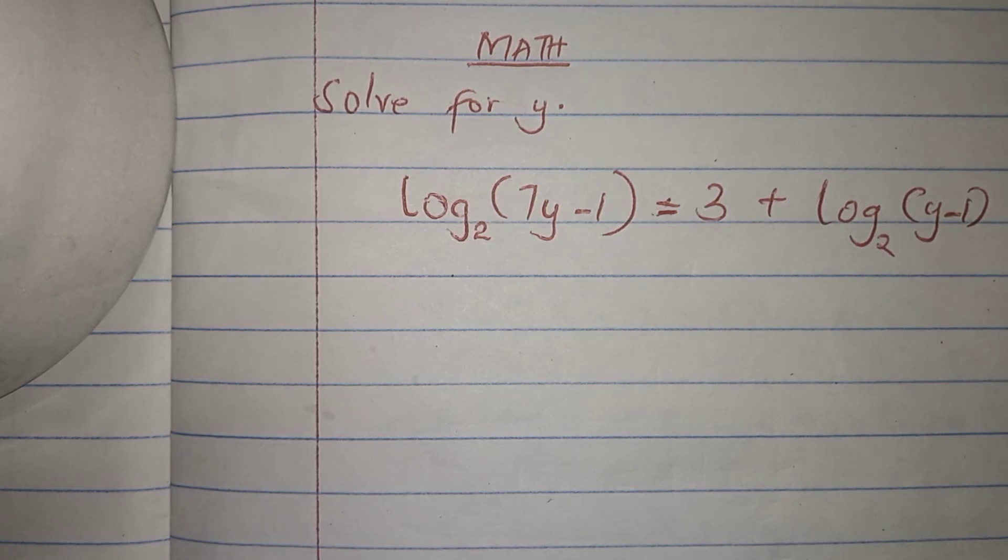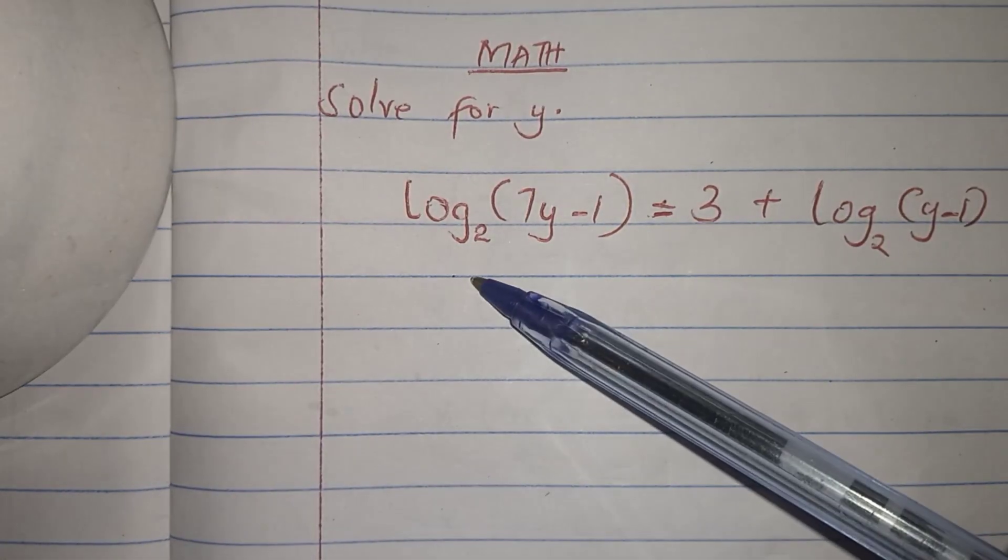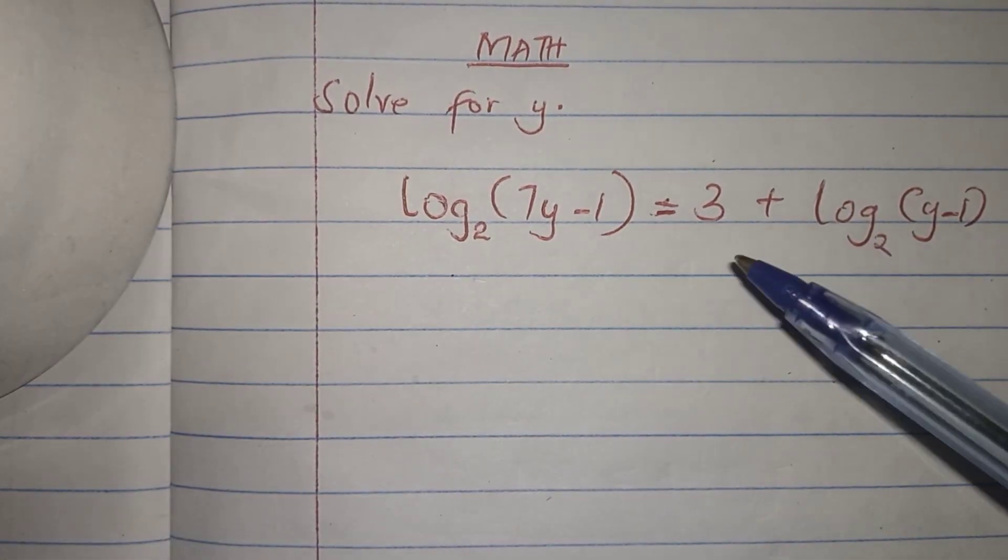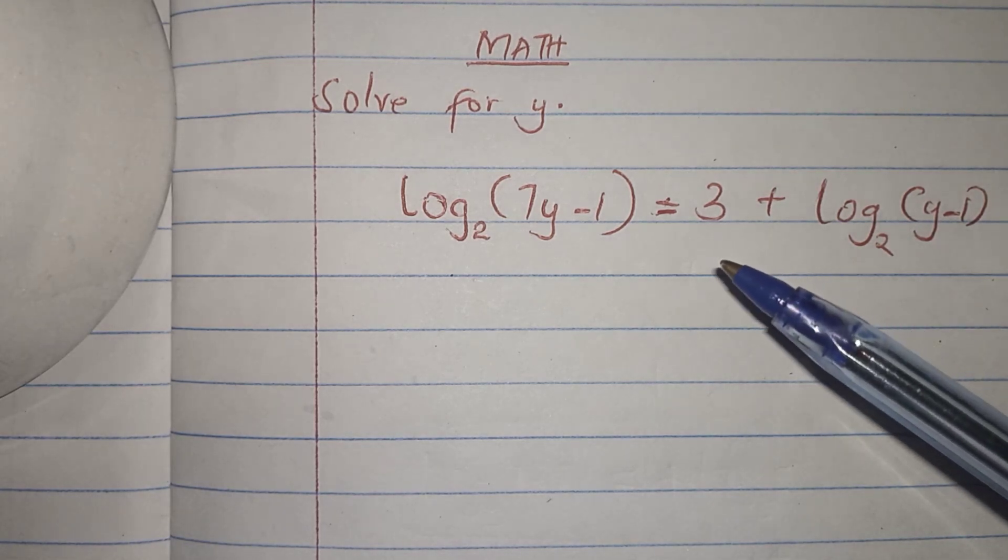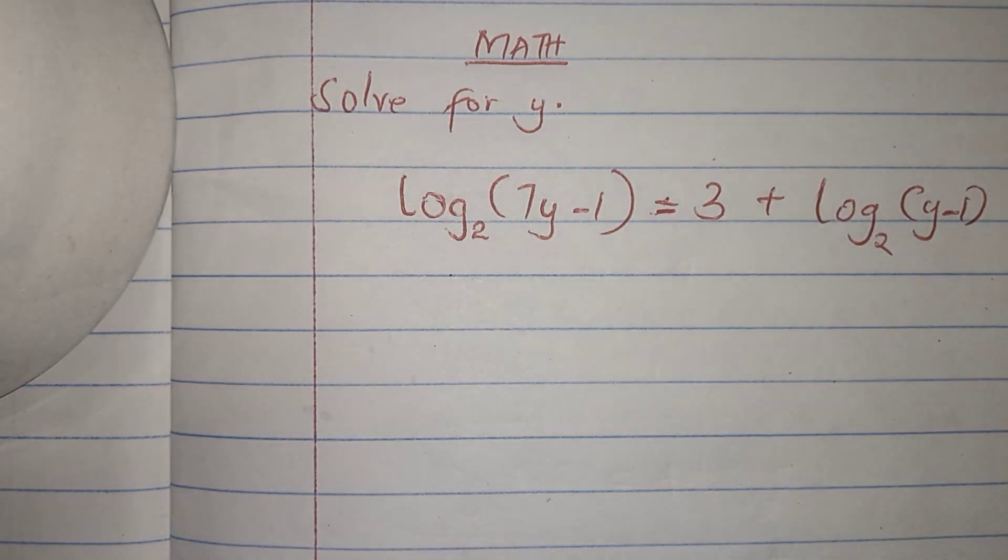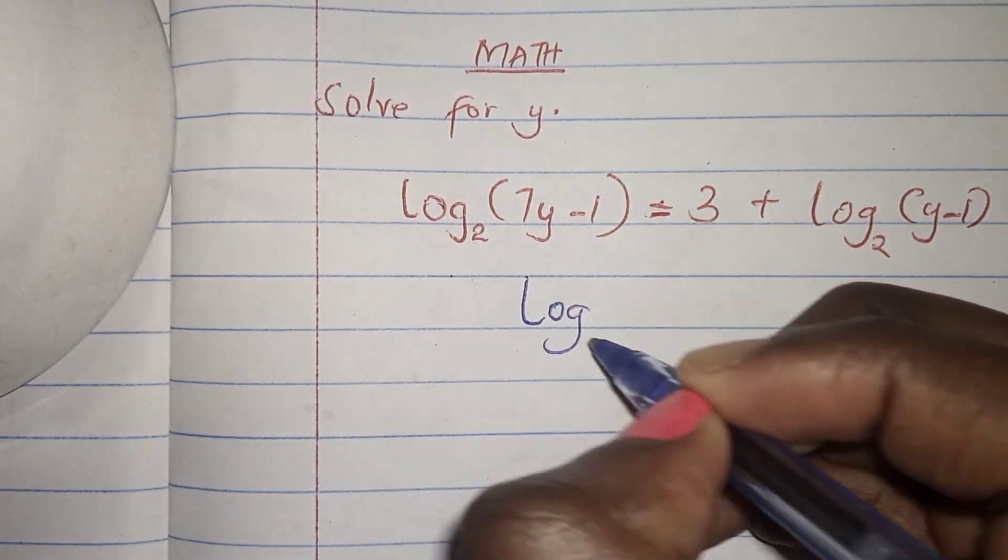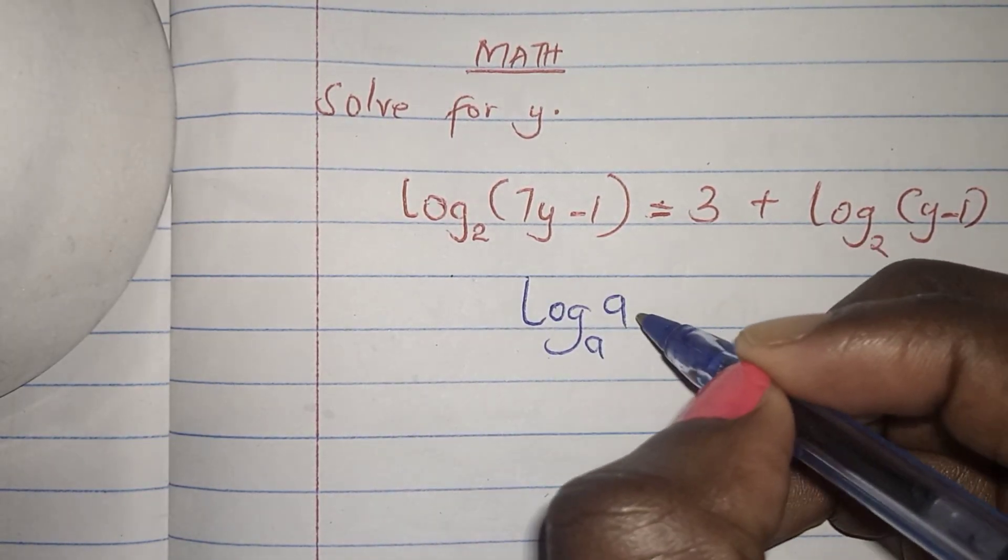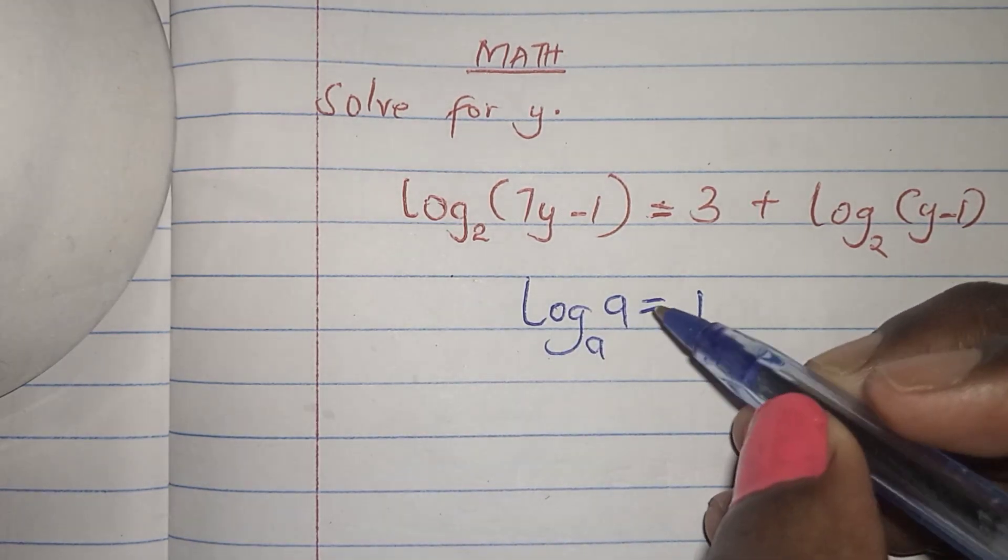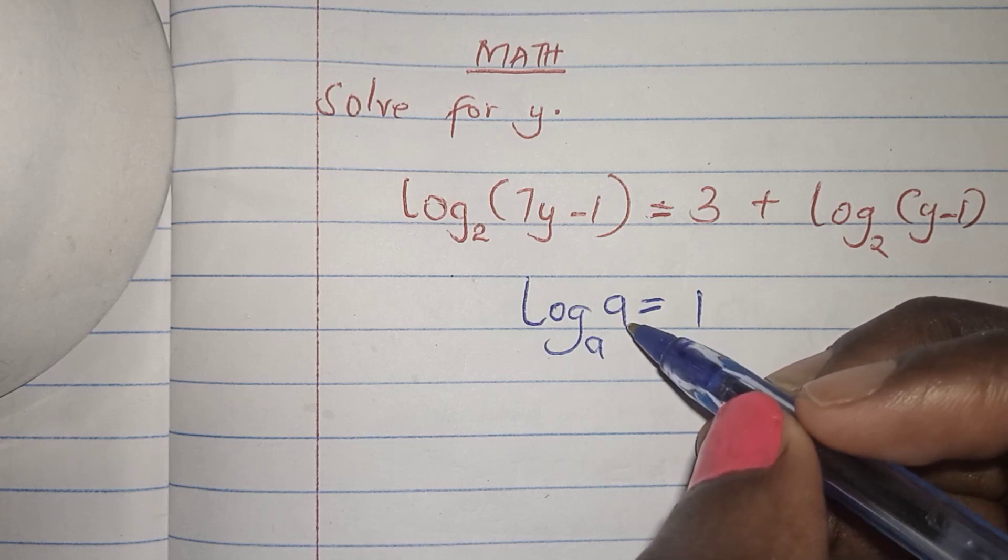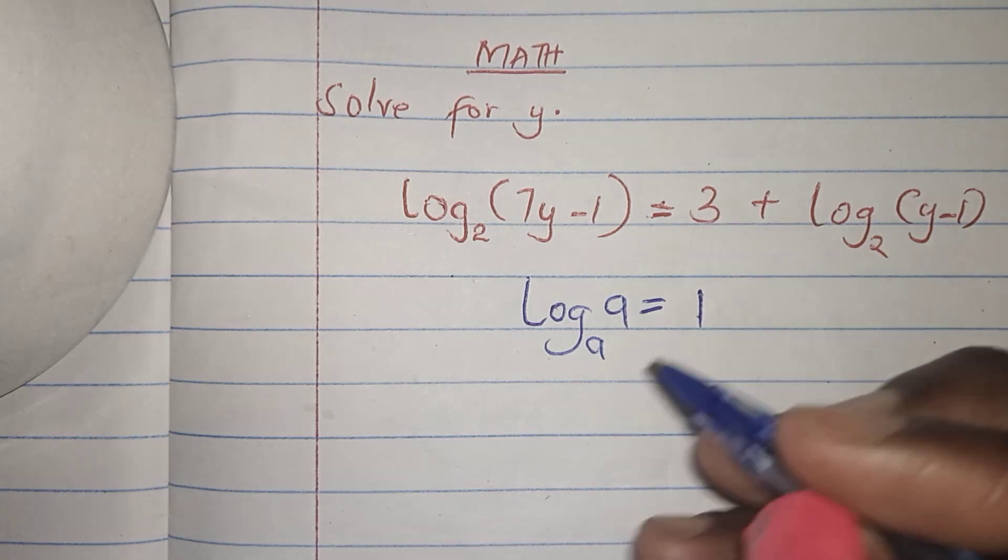We are supposed to solve for the value of y. You can see we have log base 2 on both sides, but this 3 over here is not in logarithm term. So what should we do? We should make it to be in logarithm term. If you remember this law of logarithm which says that log base a of a equals 1 - if the base and the log itself are the same, it equals 1 - we can write this 3 in logarithm term.